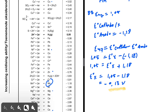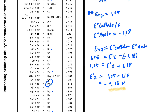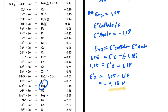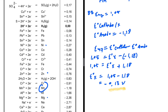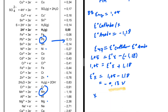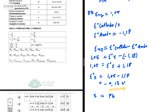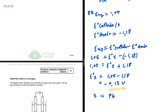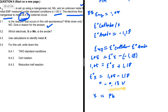Returning to the table of standard reduction potentials, a reduction potential of minus 0.13 volts corresponds to Pb. We can clearly see that in the table, so X is Pb. That completes question 8.3.